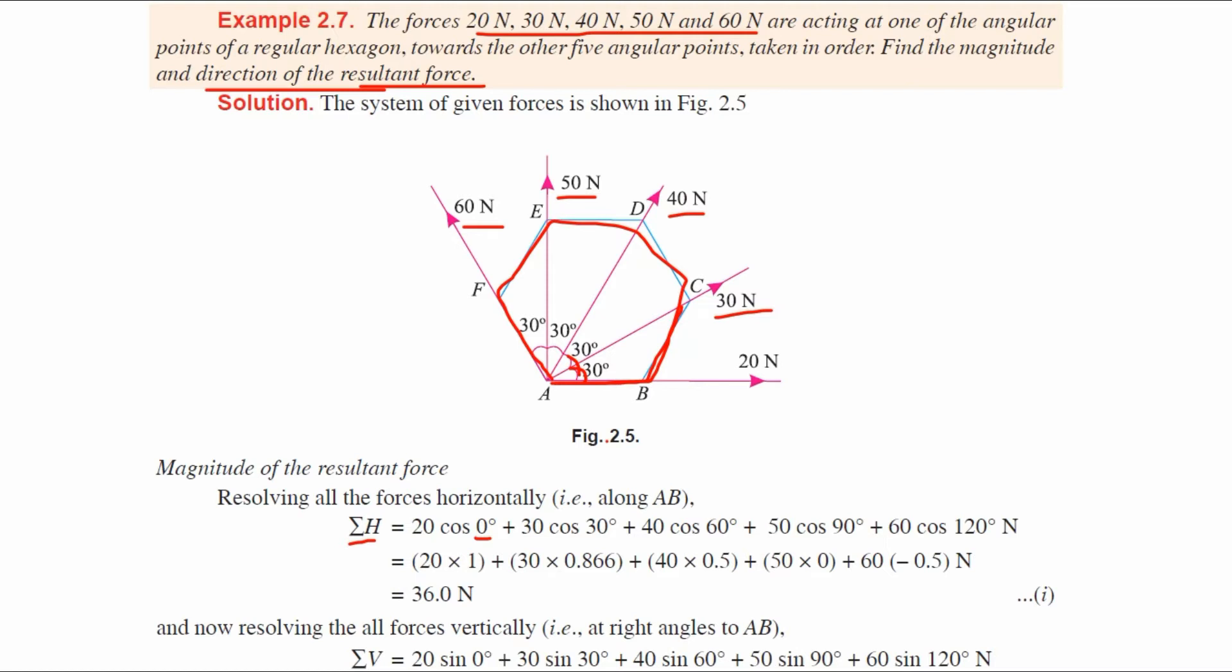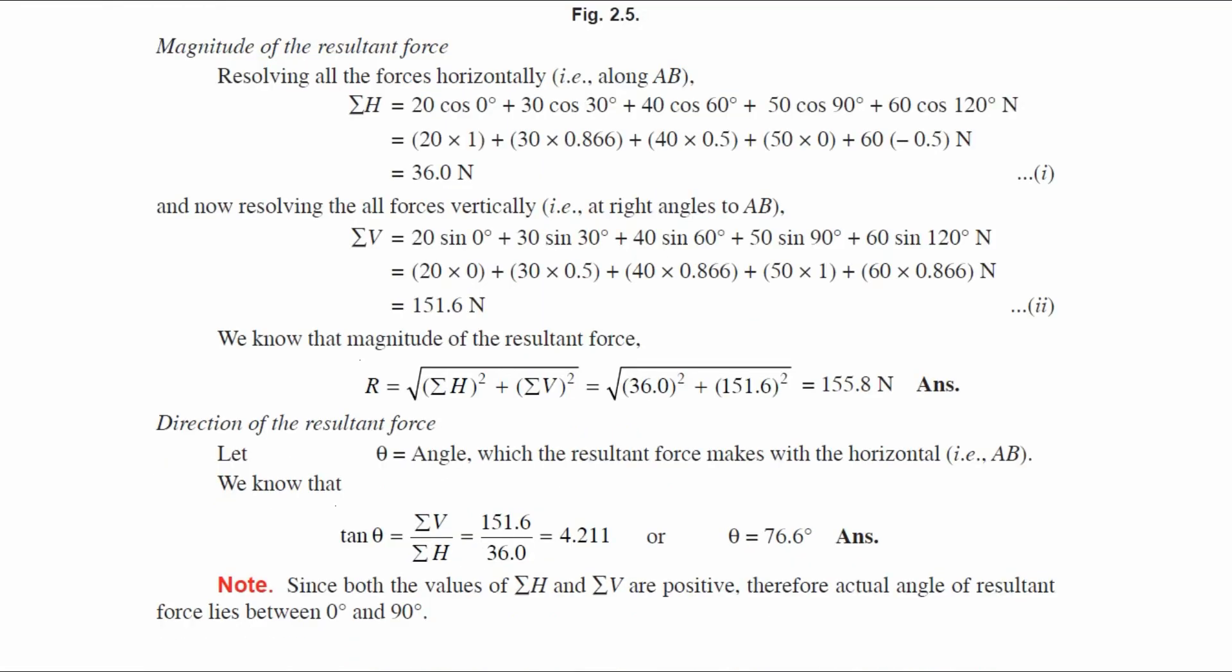Solving this equation: 20 times 1, plus 30 times 0.866, plus 40 times 0.5, plus 50 times 0, plus 60 times negative 0.5. We get Sigma H equals 36 Newton.